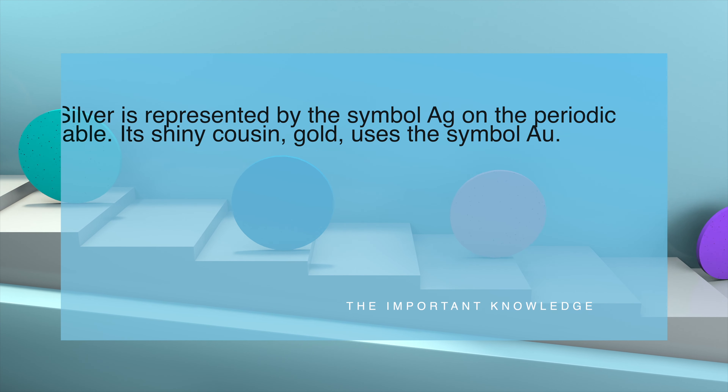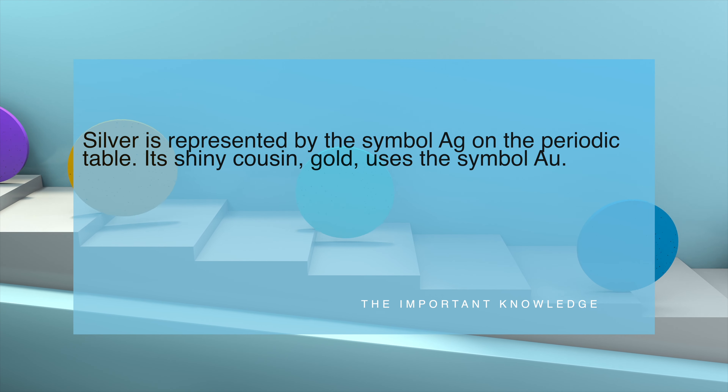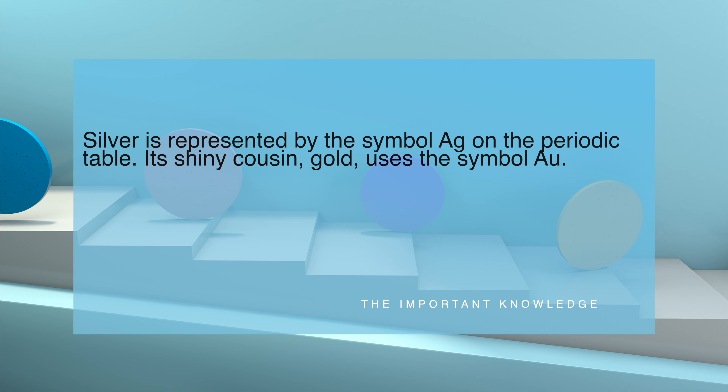Silver is represented by the symbol Ag on the periodic table. Its shiny cousin gold uses the symbol Au.